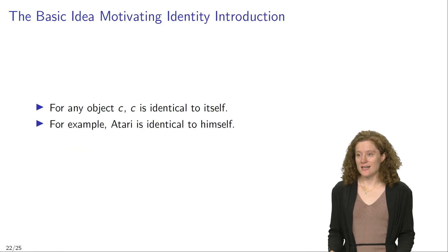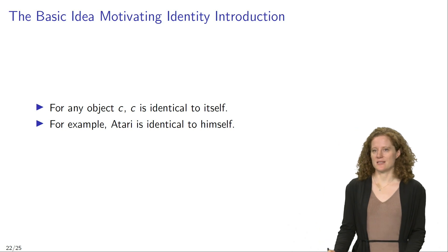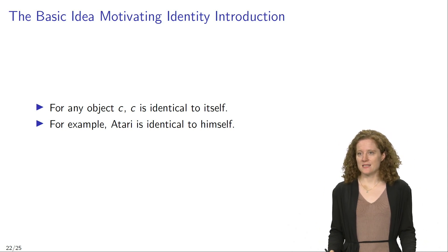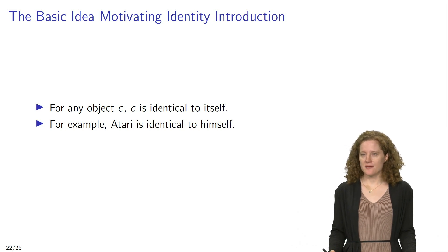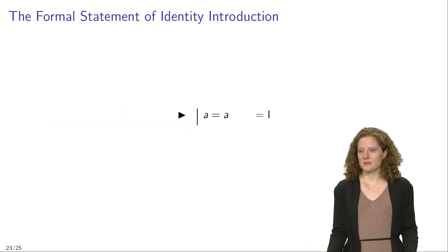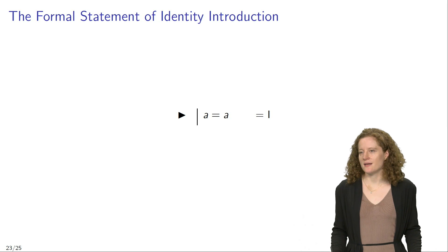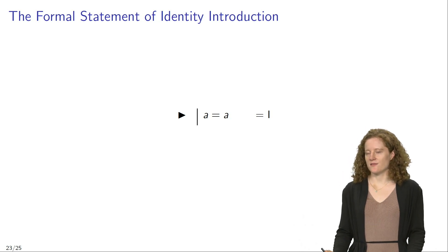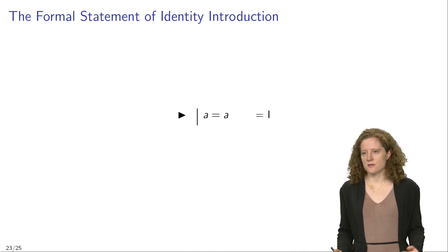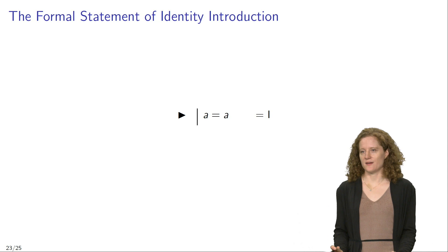Identity introduction is an incredibly easy rule of inference. The basic idea motivating this rule is that for any object C, C is identical to itself — for example, Atari is identical to himself. Formally, at any point in your proof you can assert an identity of the form A equals A and justify this by means of identity introduction. You can also introduce B equals B, C equals C, or D equals D using any name whatsoever, and justify that new line in your proof by means of identity introduction.